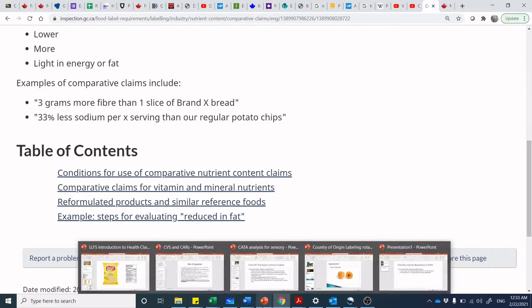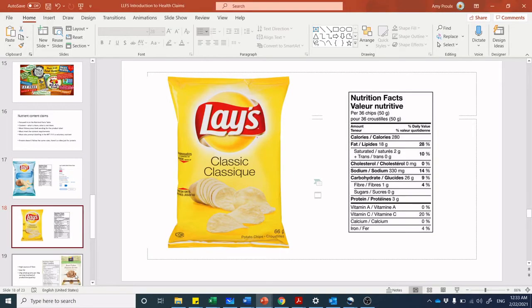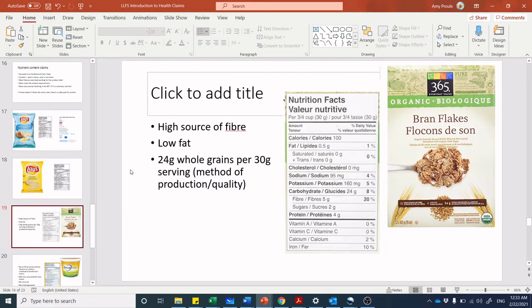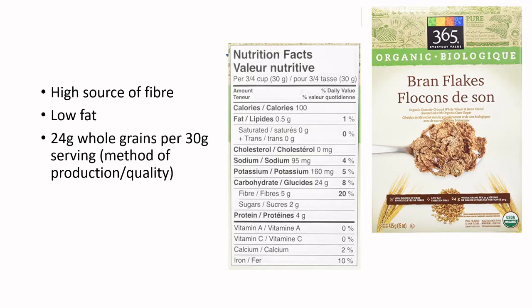You can see how it gets to be a bit of a headache going back and forth, but you have to go to that level of detail. Let's jump to the next example: bran flakes with 'high source of fiber' and 'low in fat' on the box, plus '24 grams of whole grains per 30 grams' — that's a method of production or quality claim we'll deal with later. The reference serving size is 30 grams. 'High source of fiber' shows five grams, which is 20% of the daily value.